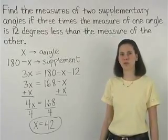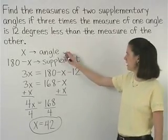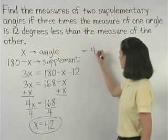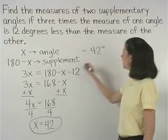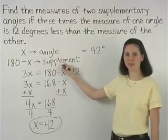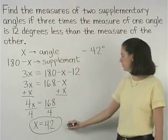So the measure of one angle, which is x, is 42 degrees. And the measure of its supplement, which is 180 minus 42, is 138 degrees.